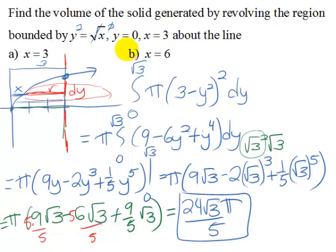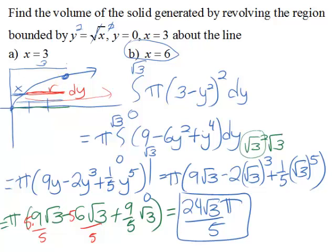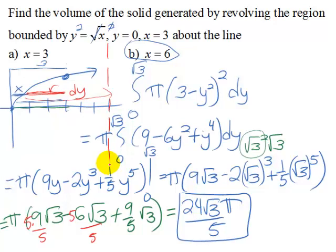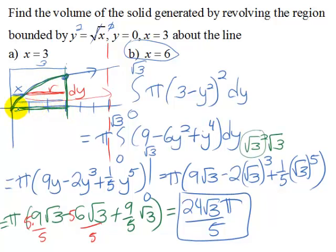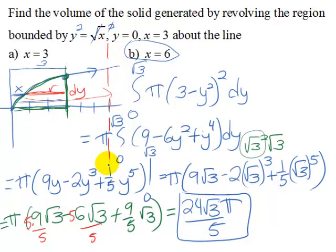Now how would this be different if we rotated about x equals 6 instead of x equals 3? We wouldn't have our dashed line at x equals 3, and instead we would have a dashed line over at x equals 6. A sketch is important because it helps you see what your radius is, where your slices are, and so forth. As we rotate this curve about this line, the curve actually stopped at x equals 3. So visualize this region rotated around this axis at x equals 6 — you can see that you're going to have a cylindrical hole in the middle when you rotate around.